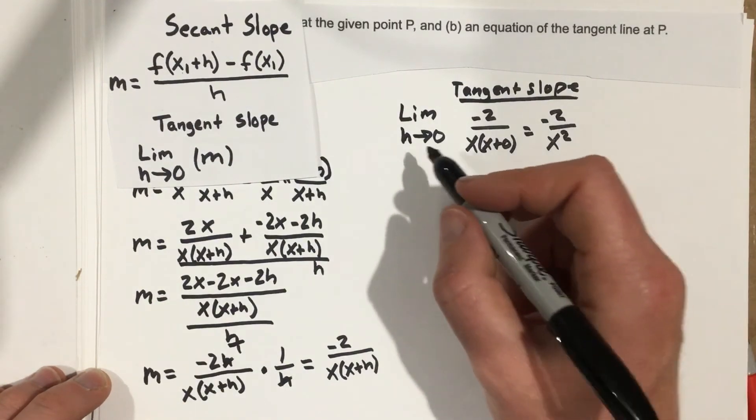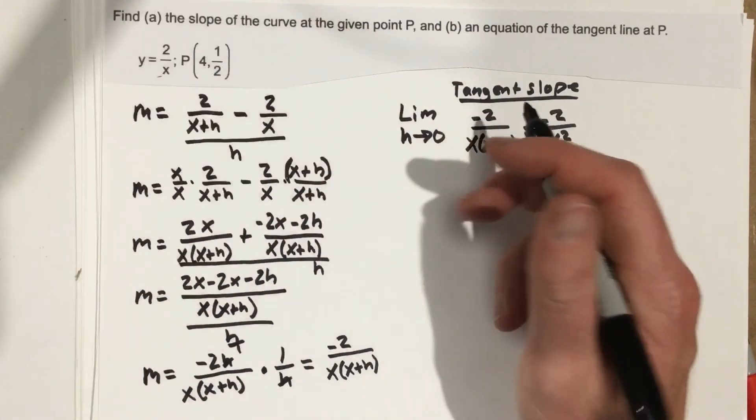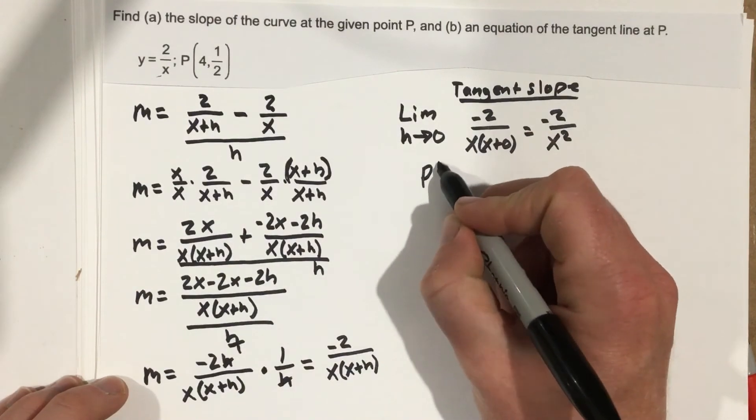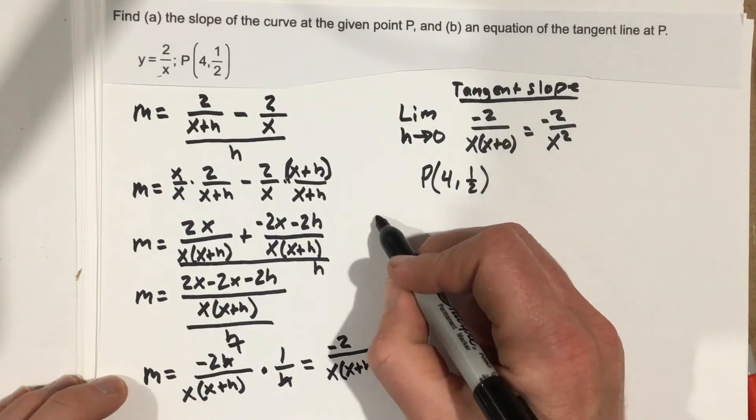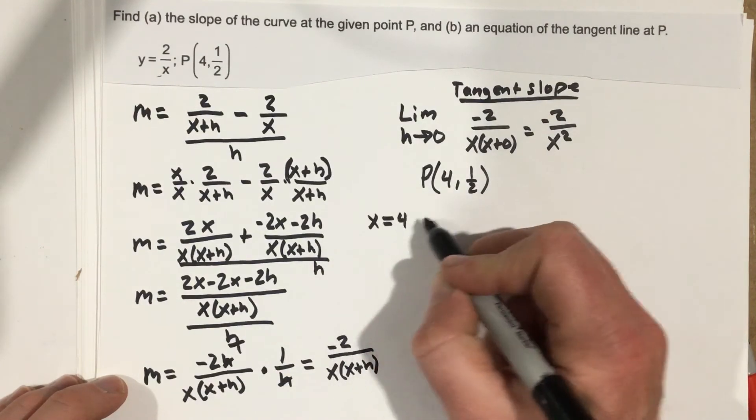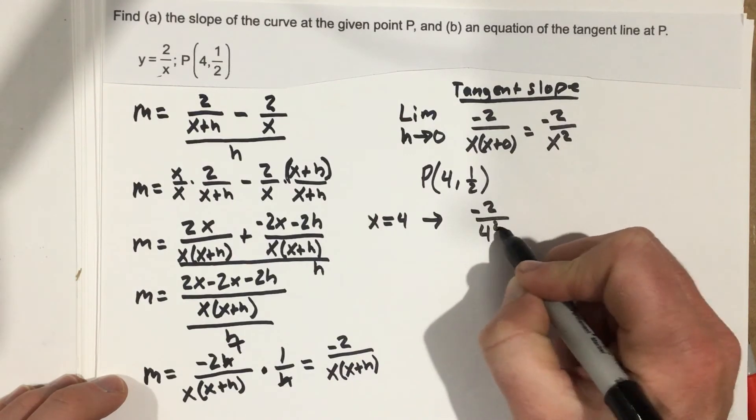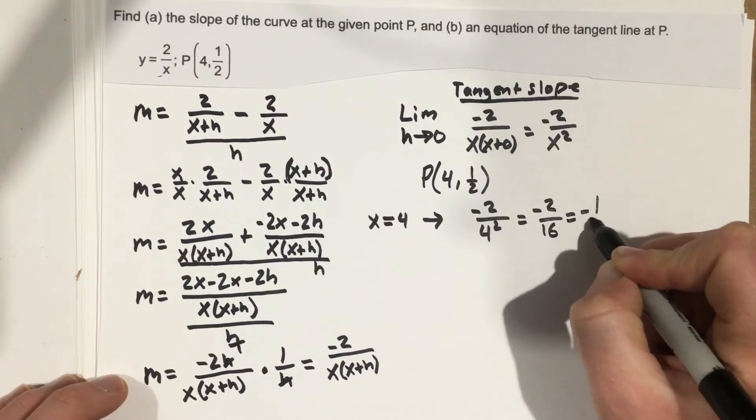And then we just need to use the point P. So now I'm going to get rid of this. We just need to use this point P. So P is 4, 1/2. Plug the 4 in here. So x equals 4 gives you negative 2 over 4 squared, which is negative 2 over 16, which is negative 1/8.